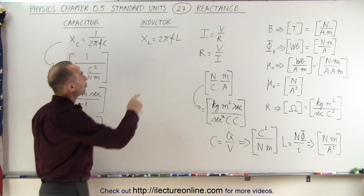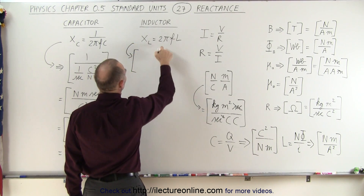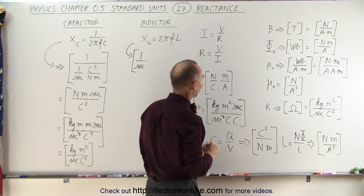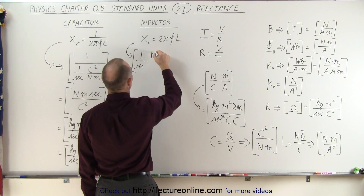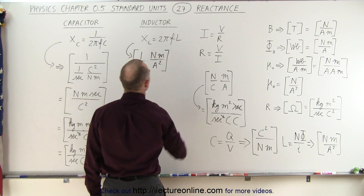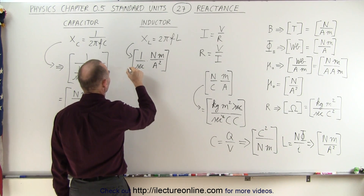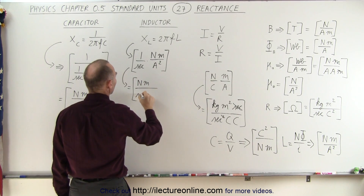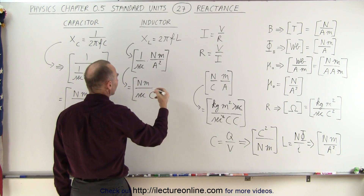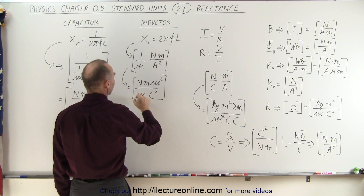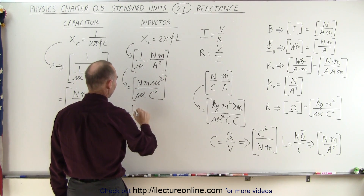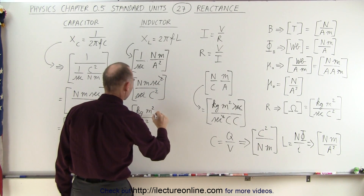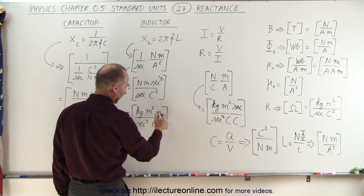Now let's do the same for inductive reactance. We have 2πfL, so the units are: 2π has no units, f is 1 over seconds, and self-inductance is newton meters per amp squared. An amp is a coulomb per second, so amp squared is coulomb squared per second squared, meaning second squared goes to the numerator. One second cancels, and converting newtons gives kilograms meters per second squared times meters — making meter squared — with a second in the numerator and coulomb squared in the denominator. This second cancels that second.